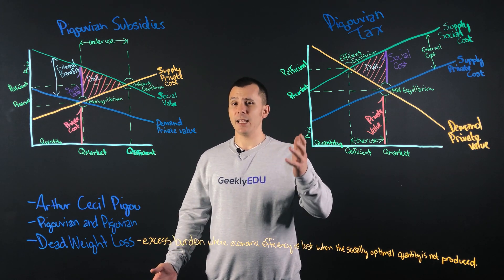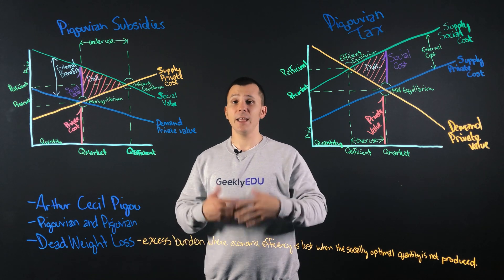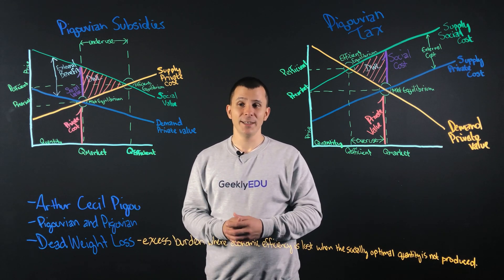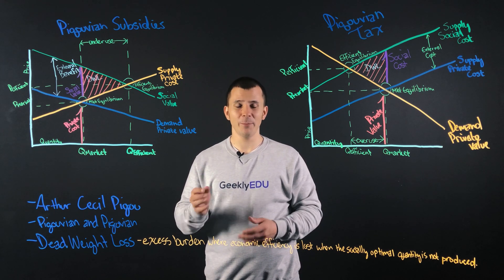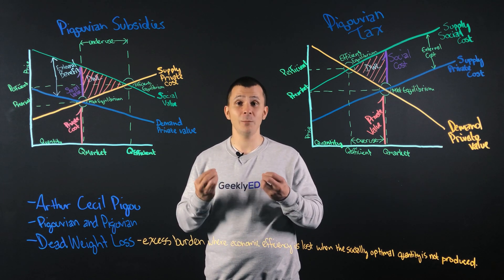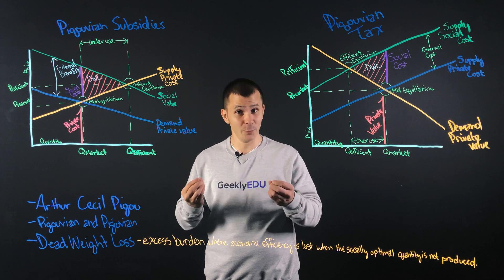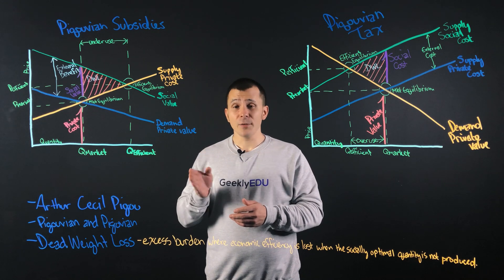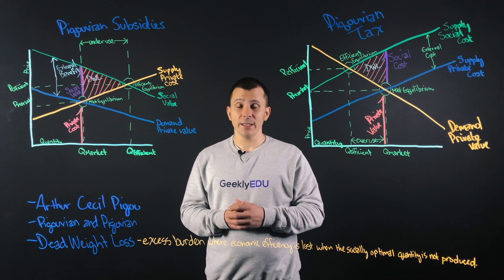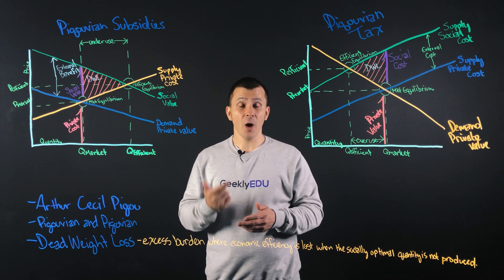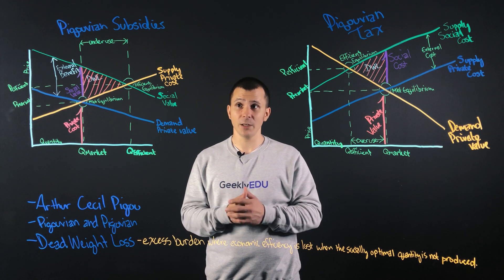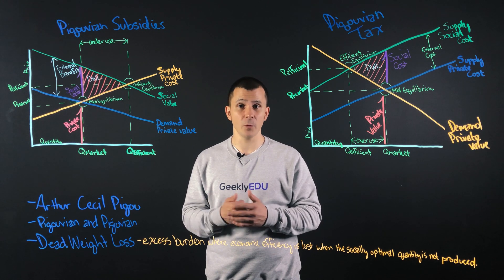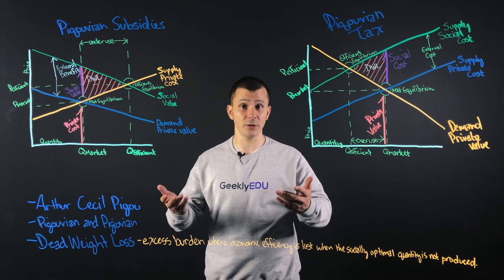Pigouvian subsidies and Pigouvian taxes come from someone named Arthur Cecil Pigou. Now, I want to say it in a more professional way for him, but I just can't. I mean him no disrespect, but Mr. Pigou has one of the best last names that I have ever come across. So Arthur had come up with a way to overcome both social costs of different things, such as pollution from manufacturing, and how to increase the demand for a good or service such as education.